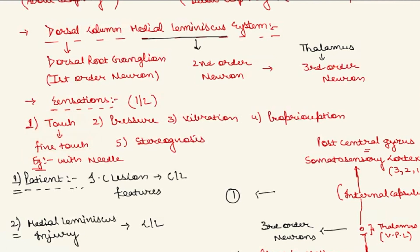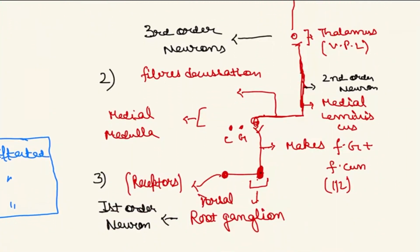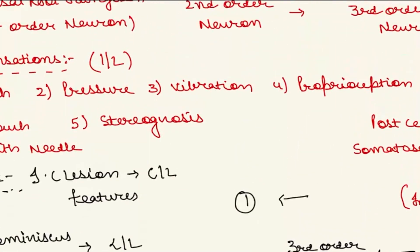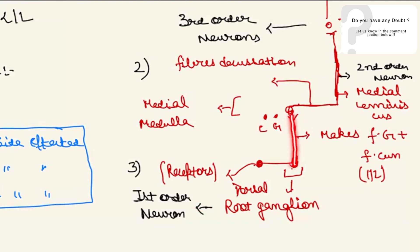Now we will understand how this pathway runs. From the receptors — whether touch, pressure, or vibration receptors — the fibers go to the dorsal root ganglion, where the first order neuron is formed. From the dorsal root ganglion, the fibers go up, forming fasciculus gracilis and fasciculus cuneatus, and reach the nucleus gracilis and nucleus cuneatus.